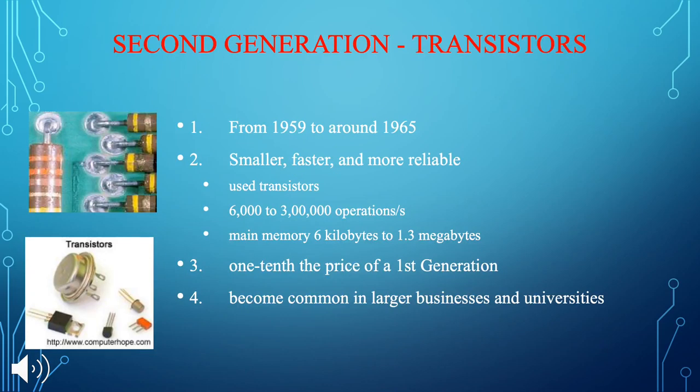Now I want to talk about the second generation. The second generation is especially known for the transistor. This generation is from 1959 to around 1965 and is a huge difference from the first generation. It's smaller, faster, and more reliable, with 6,000 to 300,000 operations per second. Main memory is 6 kilobytes to 1.3 megabytes, and one-tenth the price of the first generation.